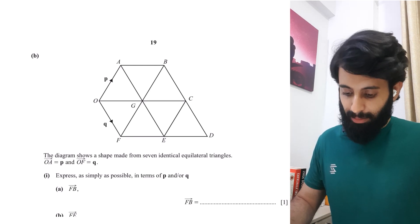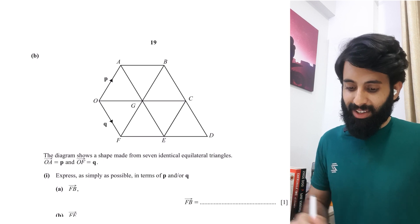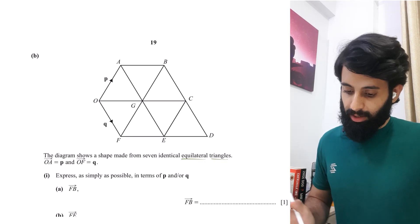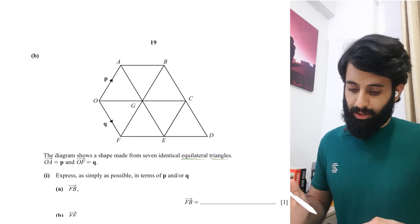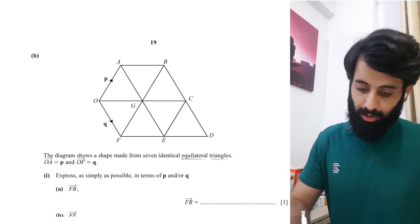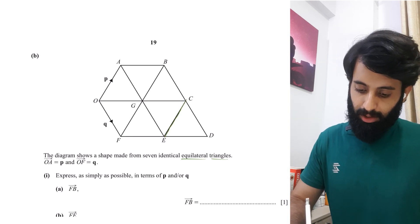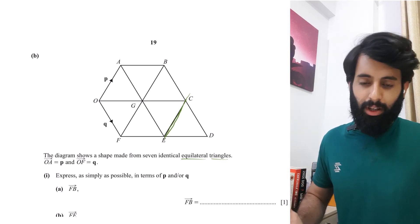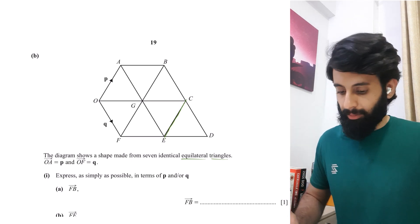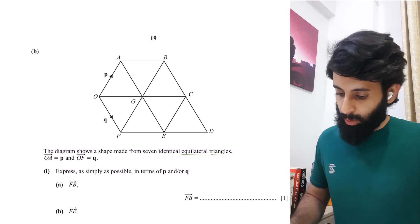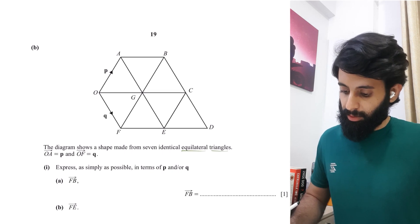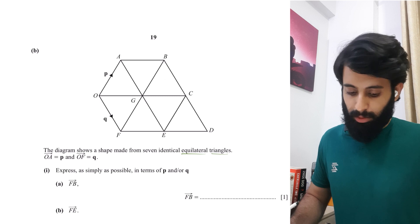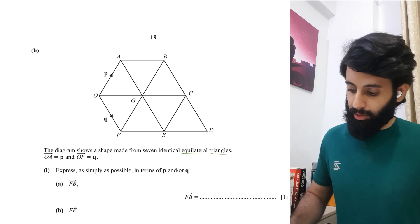The diagram shows a shape made from seven identical equilateral triangles. This shape is sort of like a hexagon — it's a hexagon up until here, and then when you add this triangle, it's no longer a hexagon. It says OA equals P, OF equals Q. Express as simply as possible in terms of P and/or Q: FB, FE, and so on.